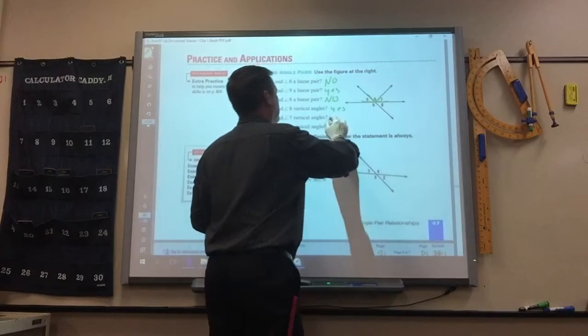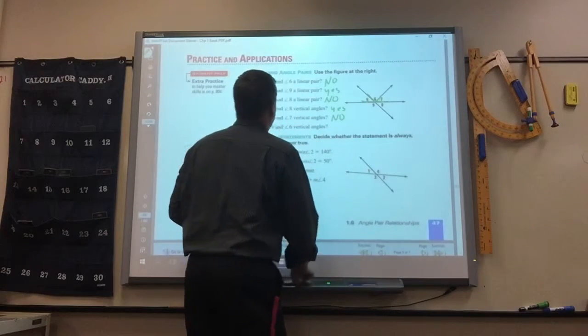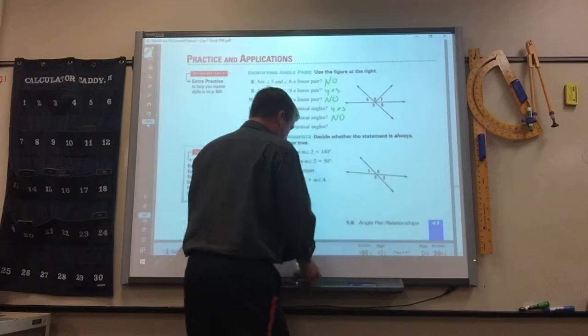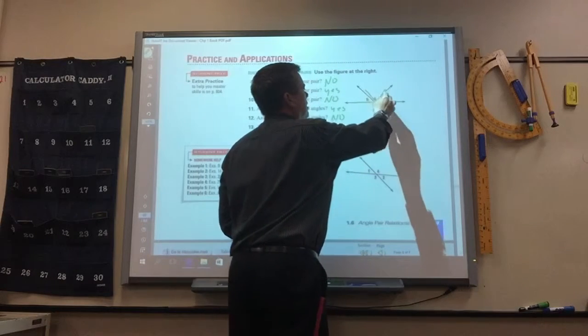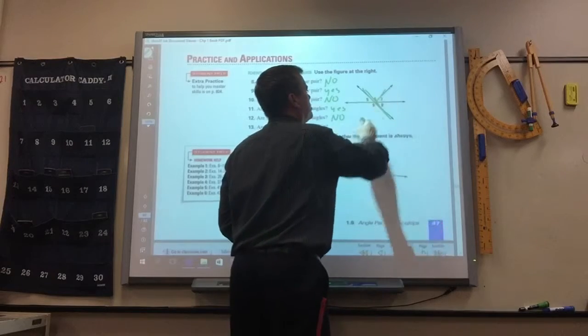They aren't next to each other but... Is 9 and 6 vertical? No, because this is a straight line but this one is not.